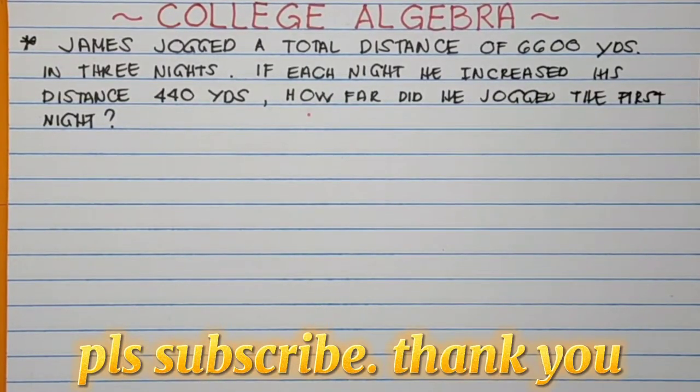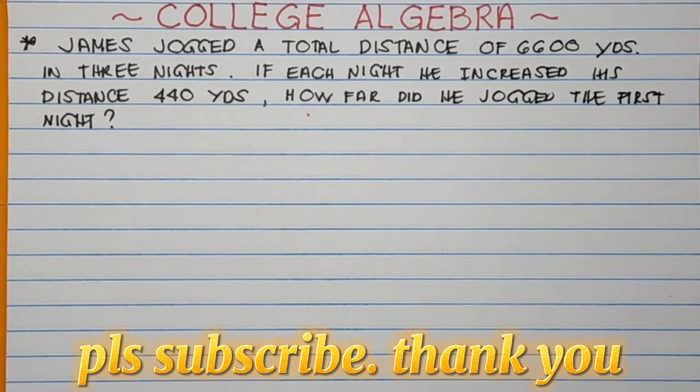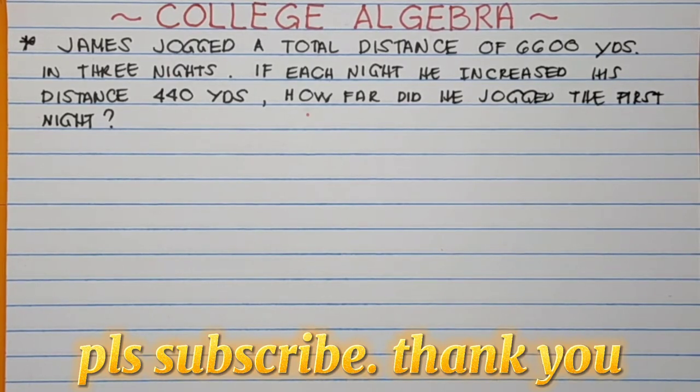Hello, for today's video, we'll discuss college algebra word problems. James jogged a total distance of 6,600 yards in three nights. If each night he increased his distance 440 yards, how far did he jog the first night?